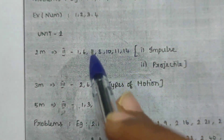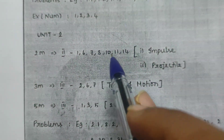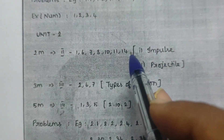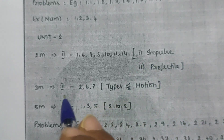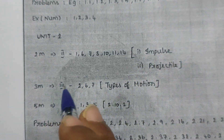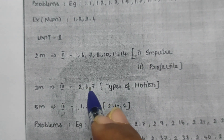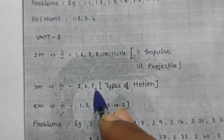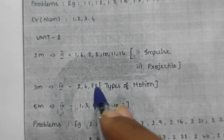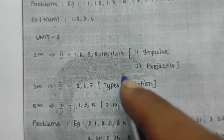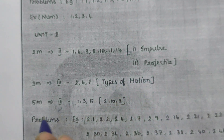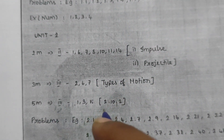2 marks: 1, 6, 7, 8, 10, 11, 2, 14. 3 marks: 2, 6, 7. 3 marks continued. 5 marks: 1, 3, 5; 2, 10.